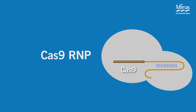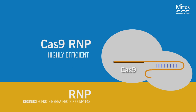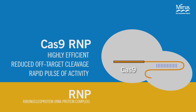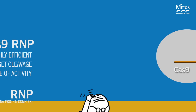Delivery of preformed Cas9 RNPs is favored by researchers who want to maximize efficiency and reduce the possibility of off-target cleavage events. This method provides the most rapid pulse of genome editing activity due to the fact that it bypasses both transcription and translation. Additionally, this method can be used for genome editing in cell types that are refractory to transfection with plasmid DNA.